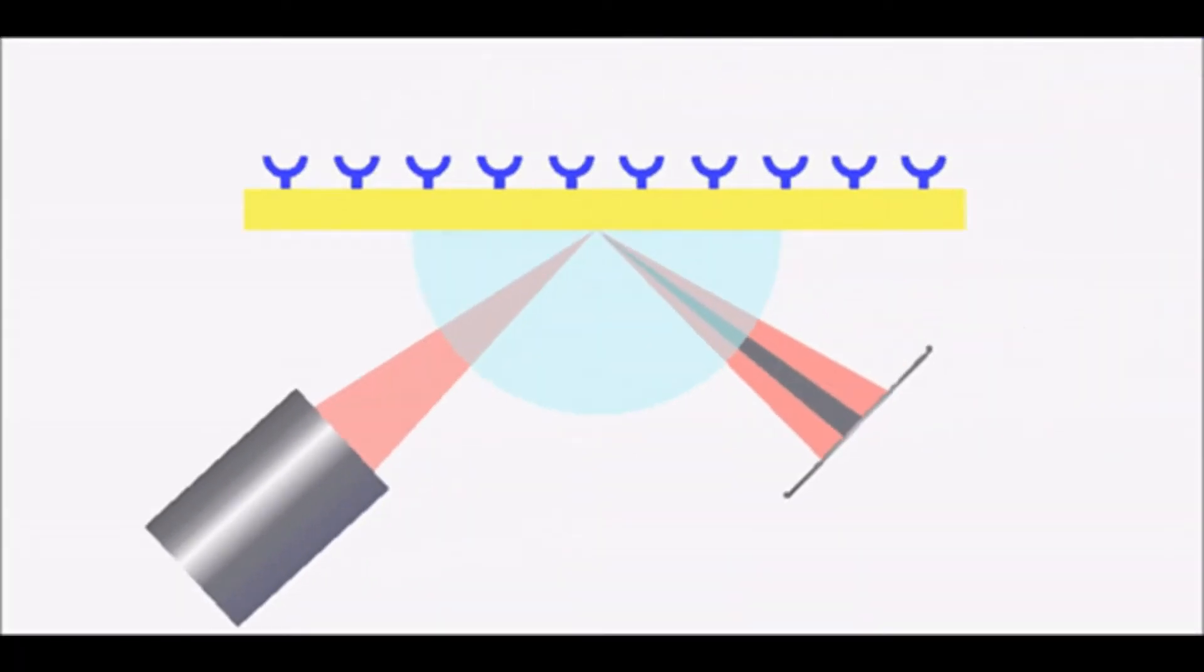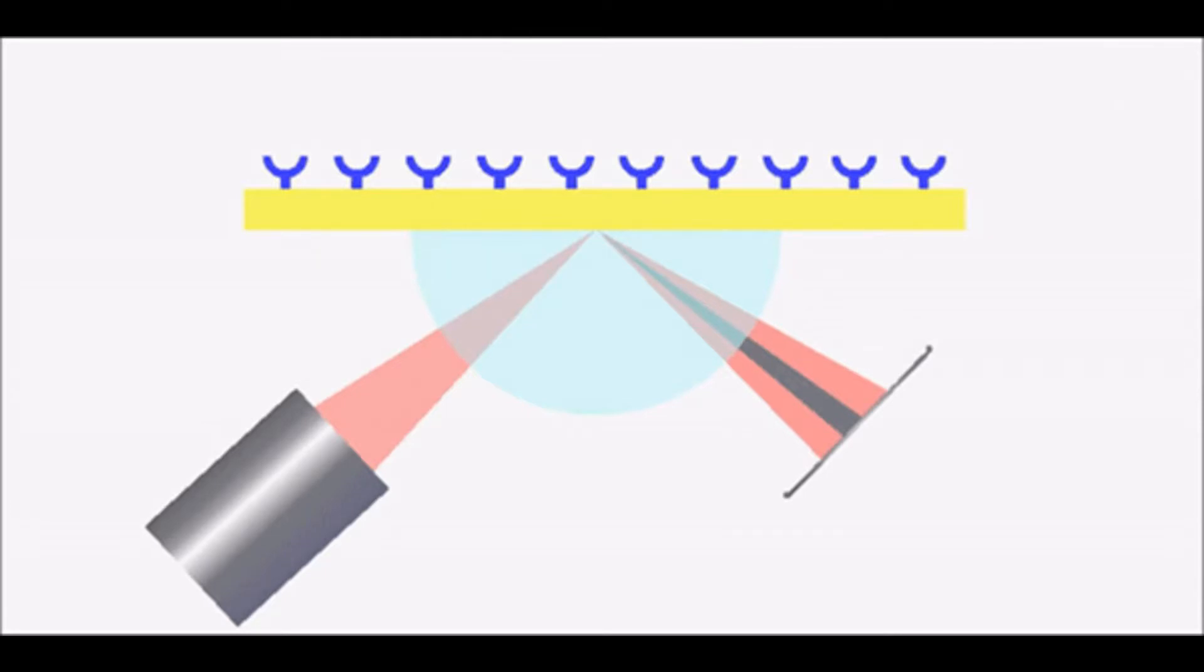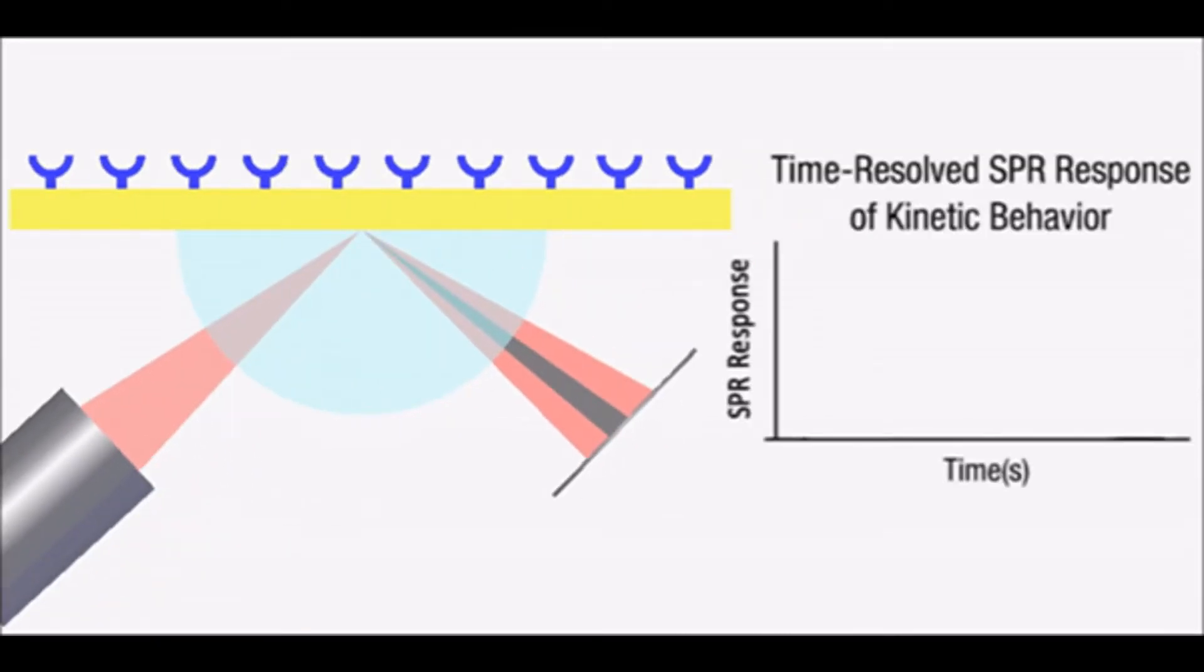Time-dependent binding interaction between molecules is a very important aspect of these sensors. By monitoring the change in SPR response over time, researchers can study the kinetics of molecular binding events.